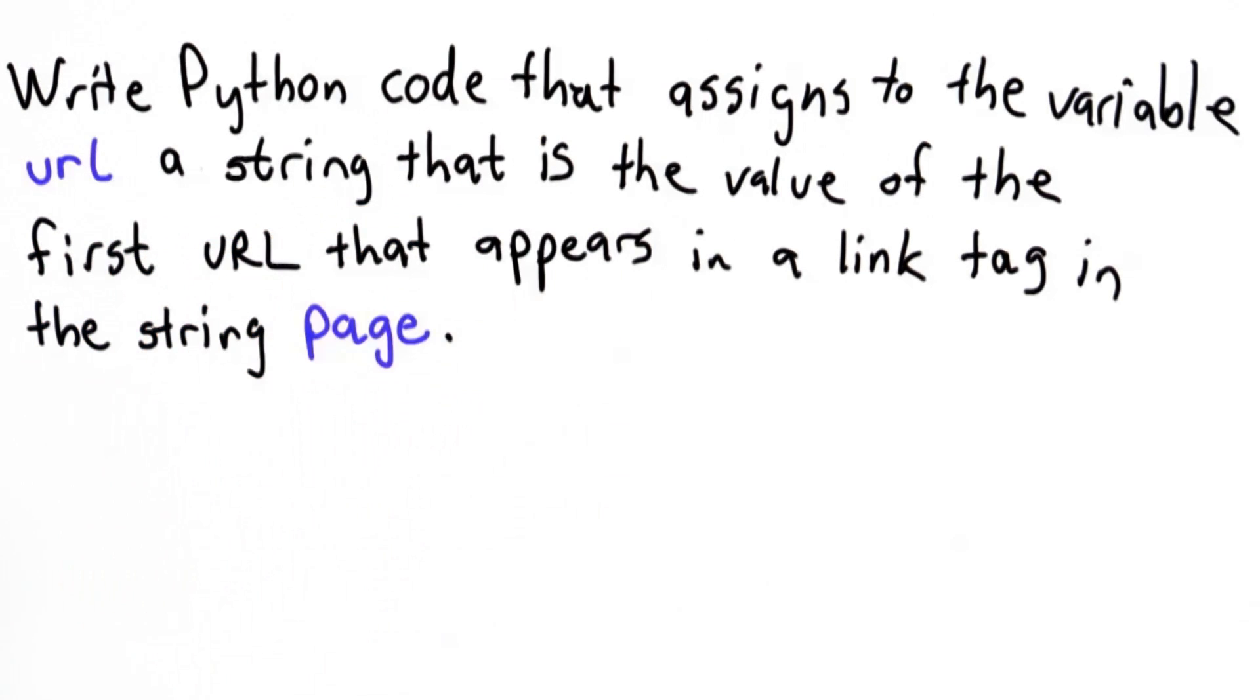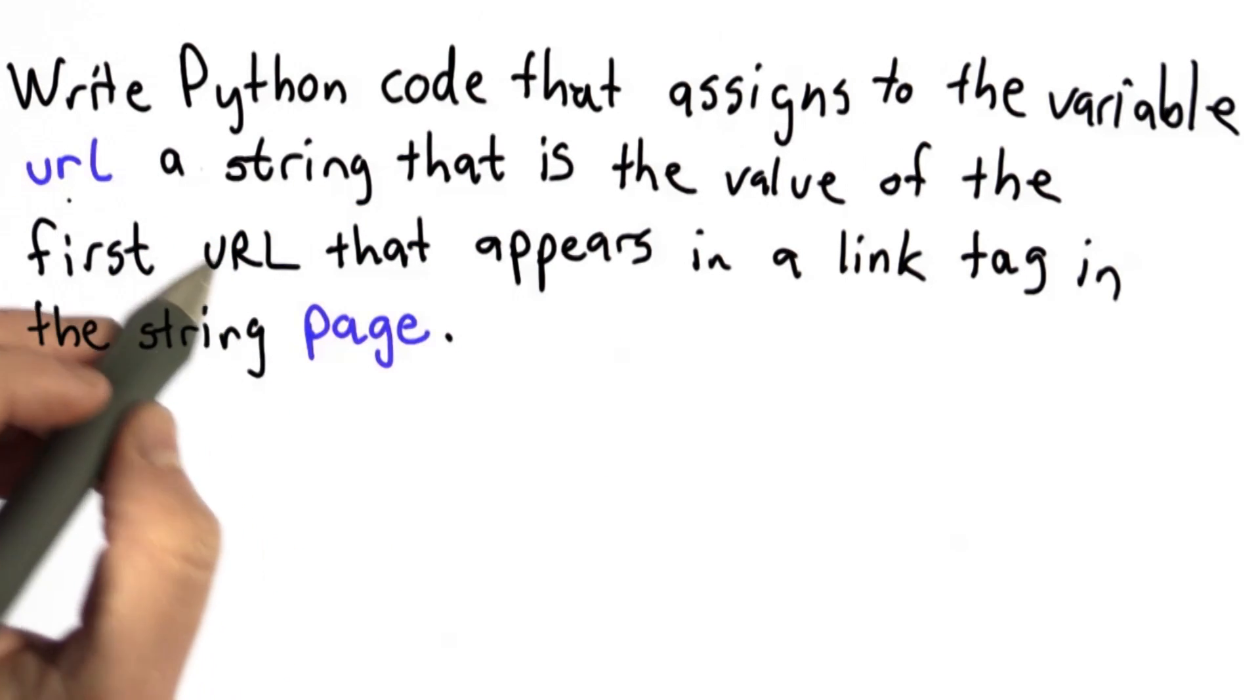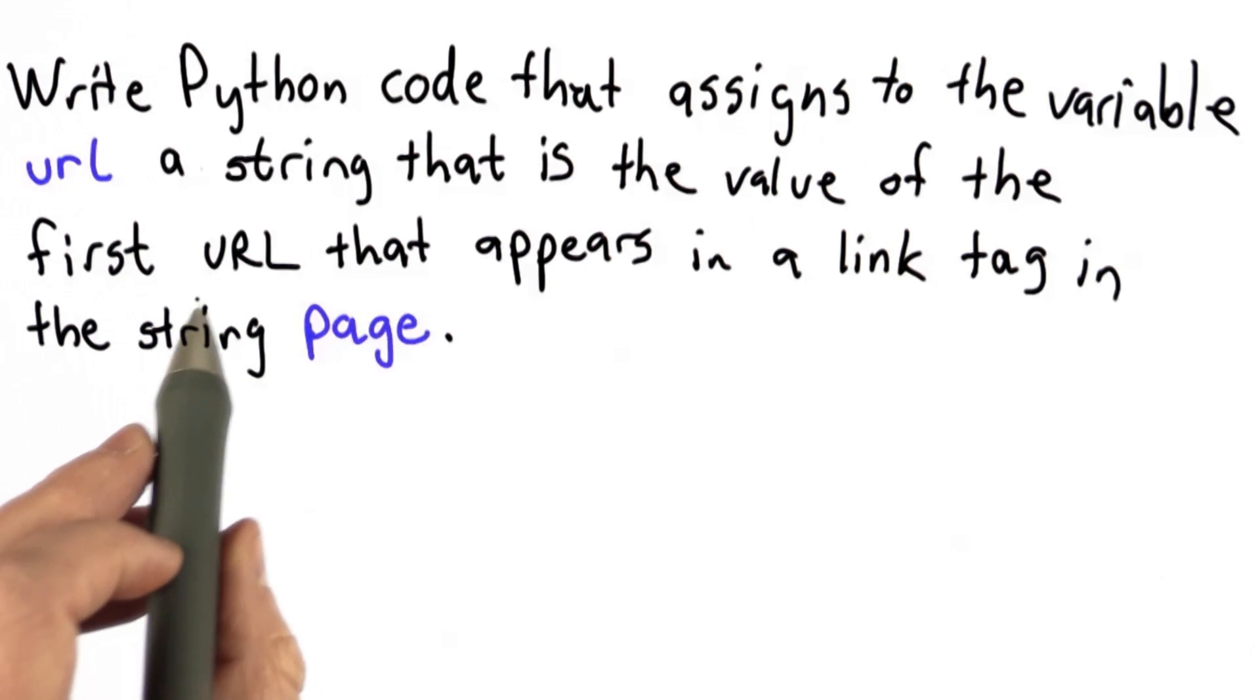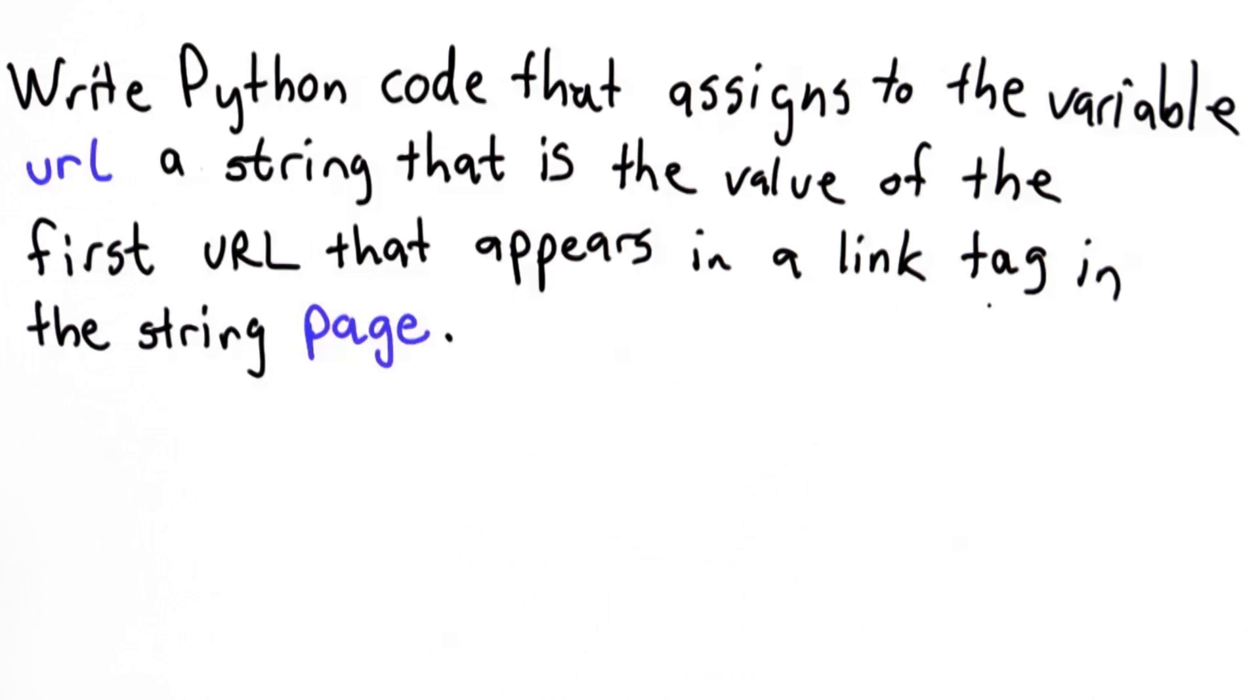So to be specific, here's the quiz. Your goal is to write Python code that assigns to the variable url, these are all lowercase letters, a string that is the value of the first URL found on the page in a link tag.